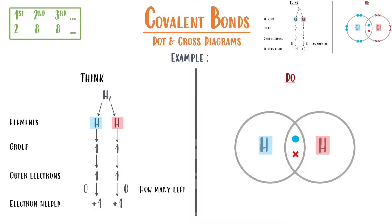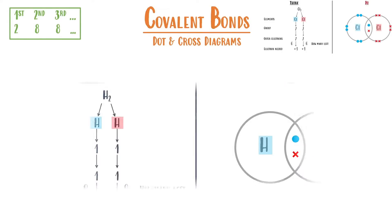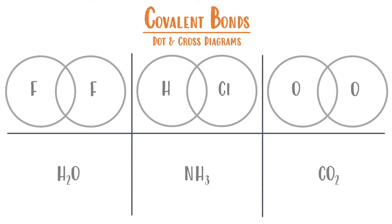Now that we've completed two examples together, here's a chance for you to get some independent practice. Here are six examples for dot and cross diagrams. You've been given the outer electron shell for the first three, as you sometimes are on your GCSE tests, but you haven't for the next three. Give yourself the next five minutes to try and complete these, and then we'll go through the answers together. If you finished earlier, just skip ahead.